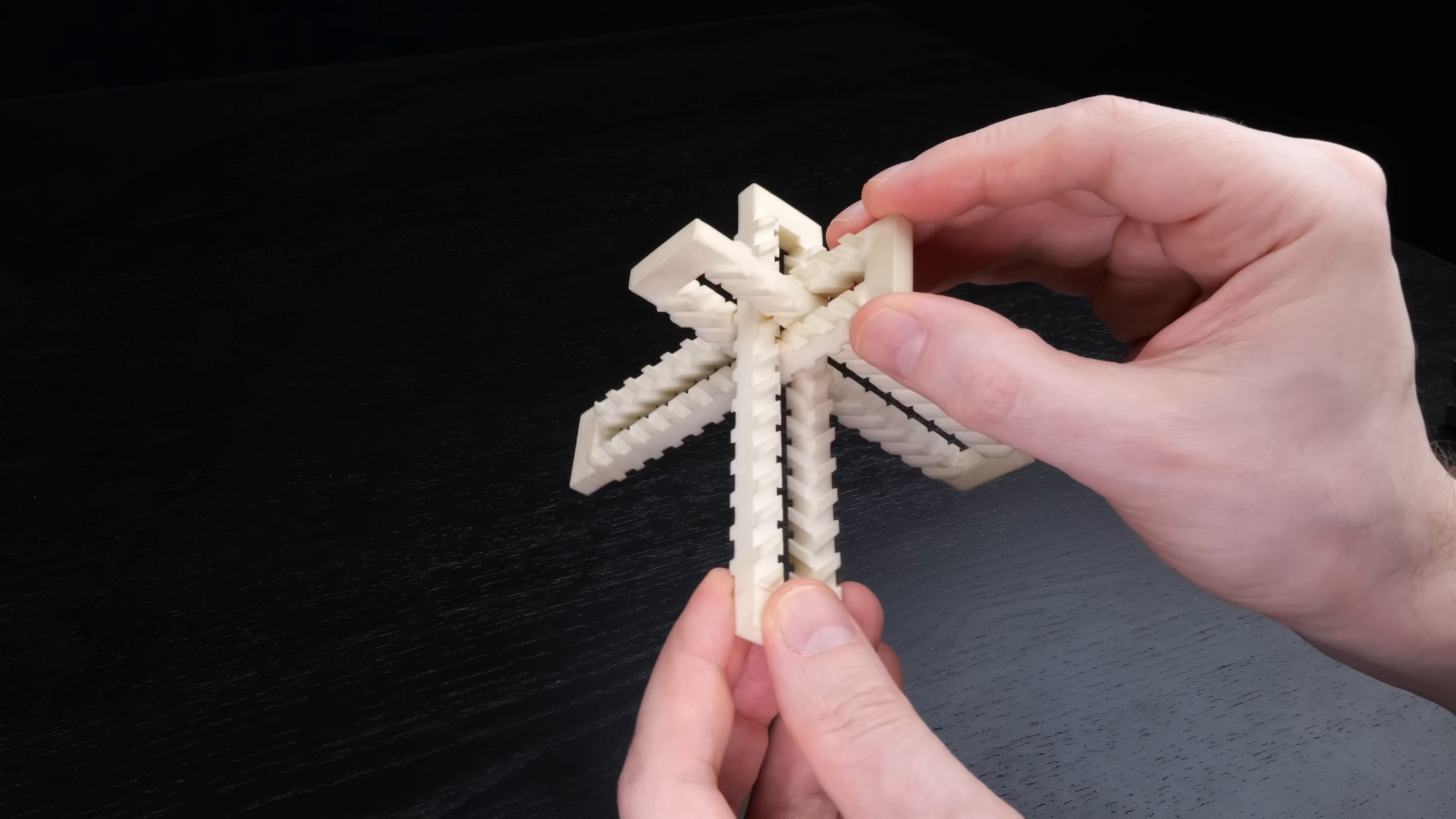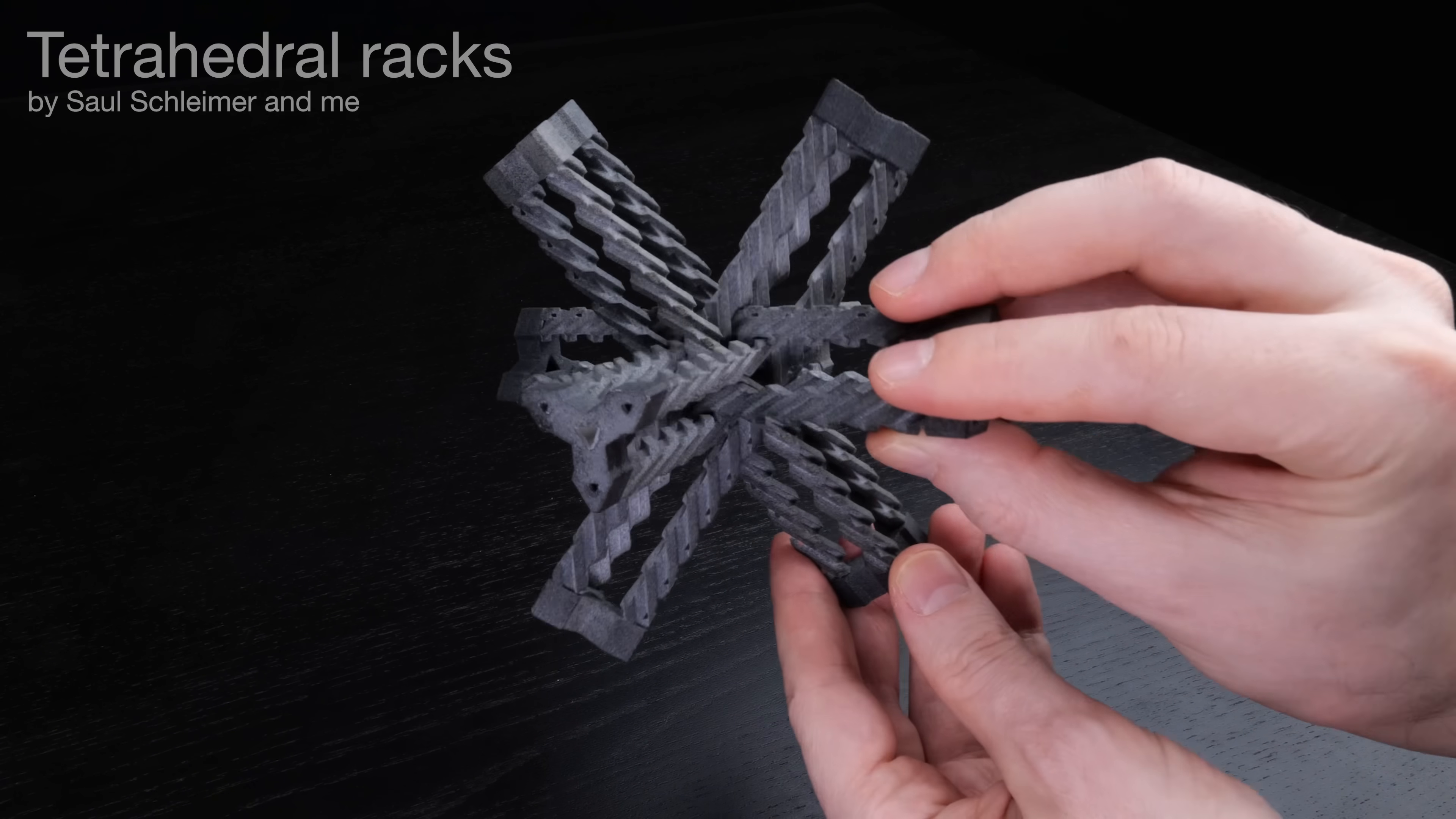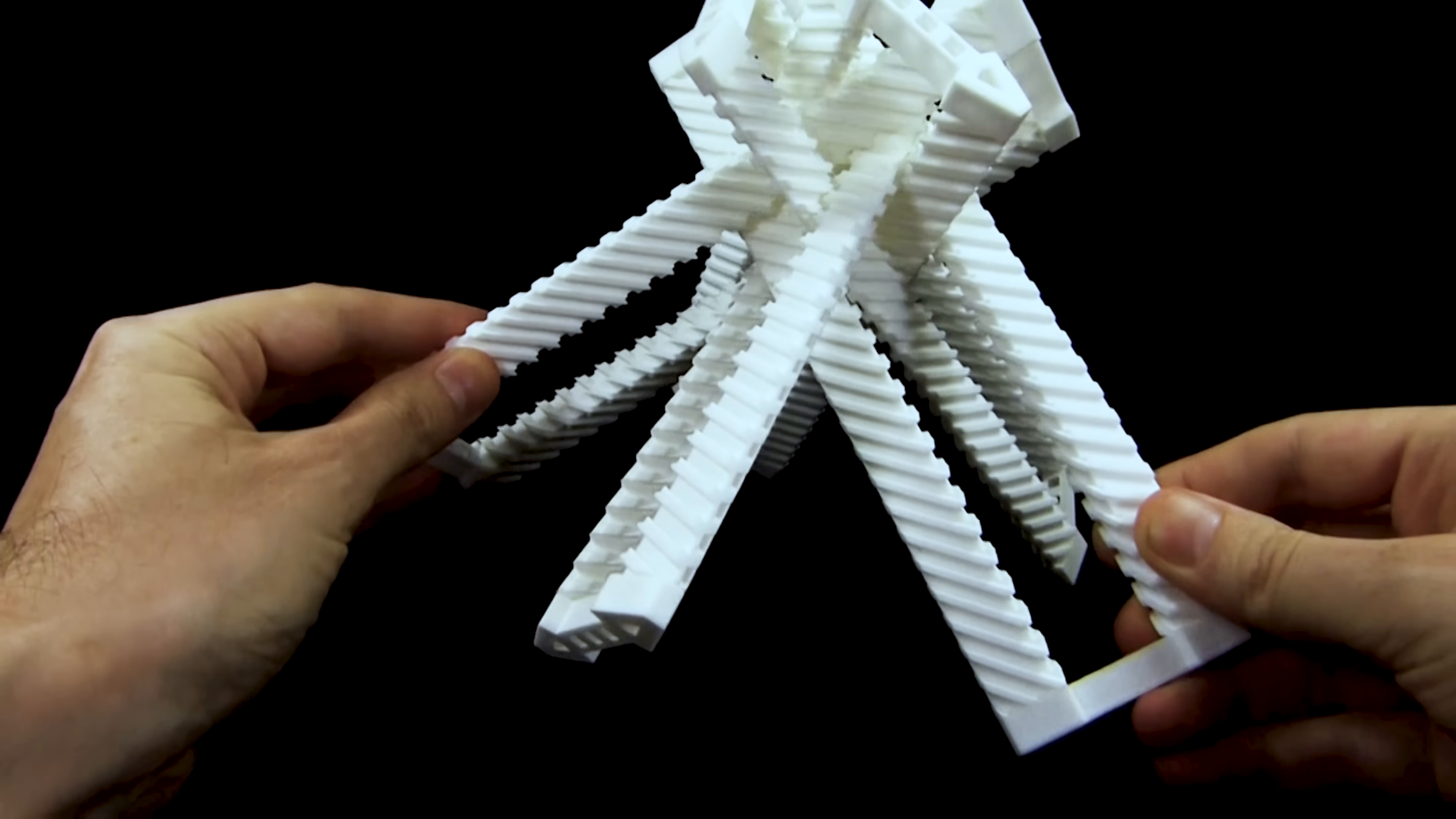This is one of a series of kinetic sculptures that started with Borromean racks, which has three parts. And then the next one was these tetrahedral racks with four parts. And then five-axis racks with five parts. So, of course, I wanted to do more than five.